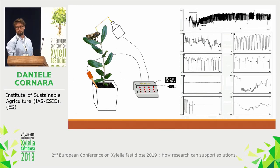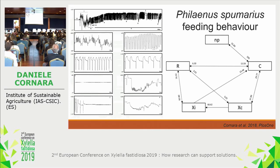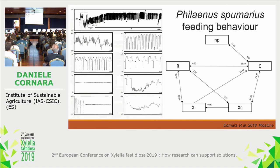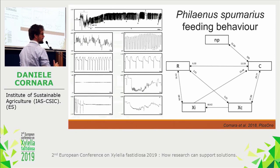This is a step of the probe. As we showed in Majorca, we characterized the feeding behavior of Philaenus spumarius on olive and found that during the probe, there are six stereotypically repeated behaviors.